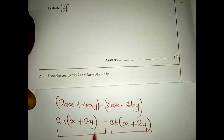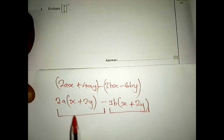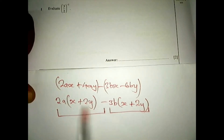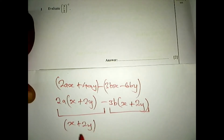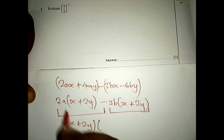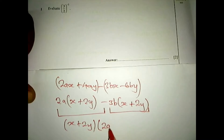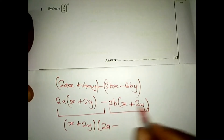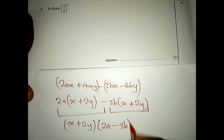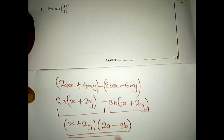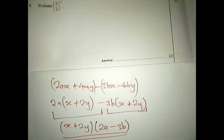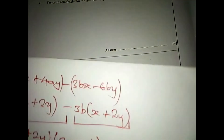Now you check: this is one term and this is another term. You notice that x plus 2y appears in both, so it is the common factor. Factor it out: (x + 2y)(2a − 3b). That is the final factorized answer.